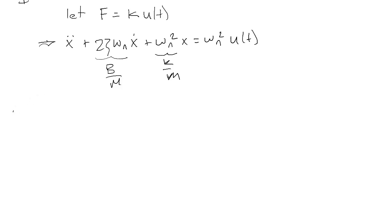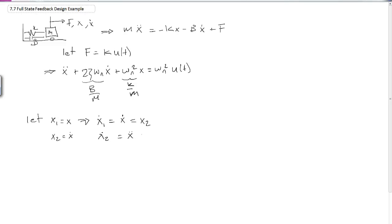We're going to put this into state space form. Let x1 equal x and x2 equal x dot. Therefore, x1 dot equals x dot equals x2, and x2 dot equals x double dot, which equals minus 2 zeta omega n x dot, which is x2, then minus omega n squared times x, which is x1, plus omega n squared times u(t).